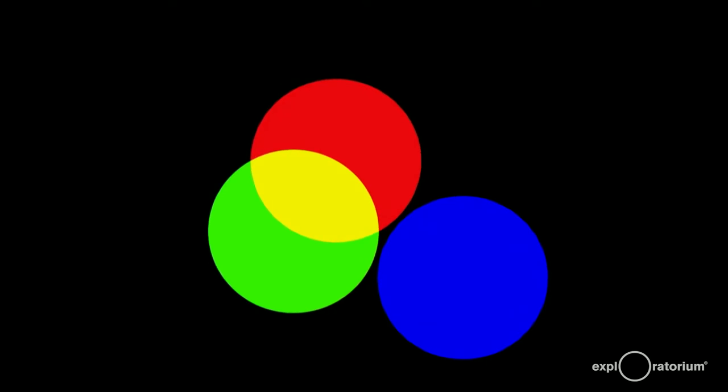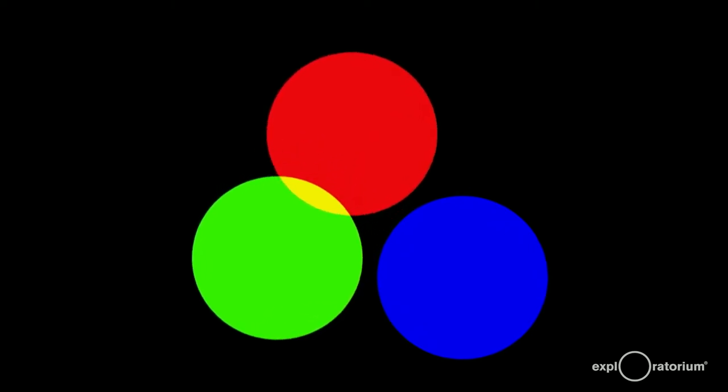The only other combination is adding red to green. Red plus green makes yellow. This may seem like a surprise to many people, but we're mixing light here, not paint. We'll get to paint in a bit.